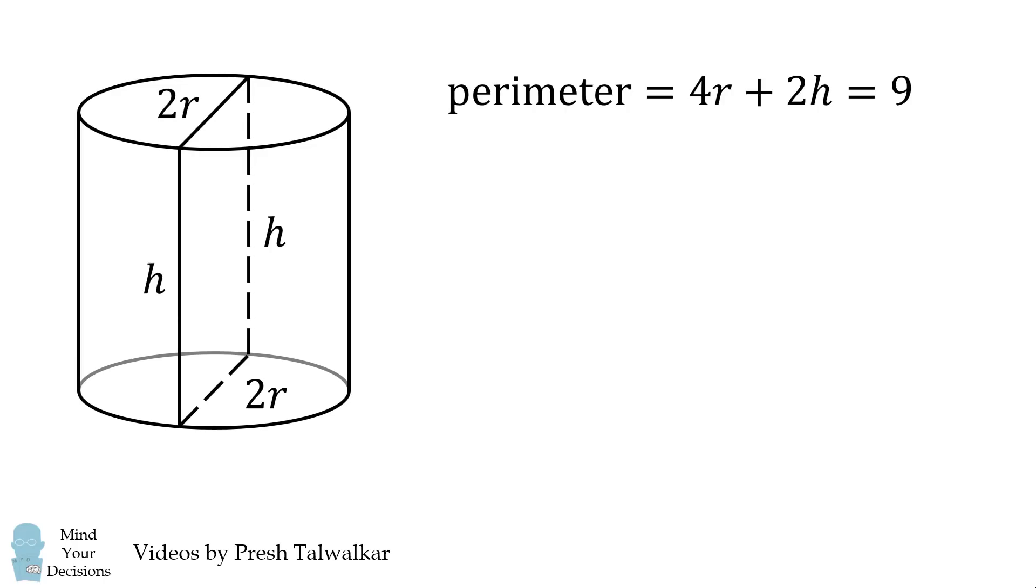The perimeter of the rectangle is given to be 9, and that equals 4r plus 2h. We can divide both sides by 2 to get h is equal to 4.5 minus 2r.